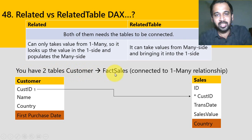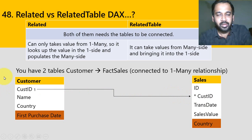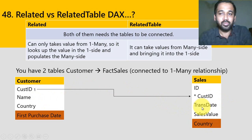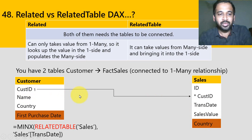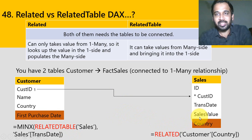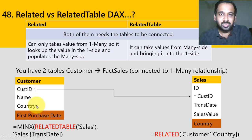Say you have two tables — Customer and Fact Sales — connected by a one-to-many relationship on Customer ID. If you want to get the first purchase date of a customer, you need the minimum date from the sales table. You would use: MINX(RELATEDTABLE(Sales), Sales[TransactionDate]), which fetches values from the related table and returns the minimum value per customer. Whereas for RELATED, you would simply write RELATED(Customer[Country]), and the system will use the relationship to trace country information from the Customer table into the Sales table.